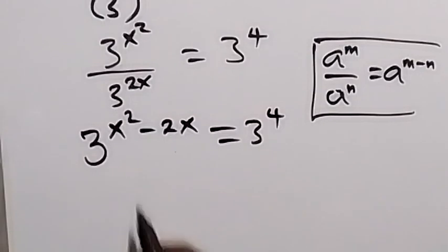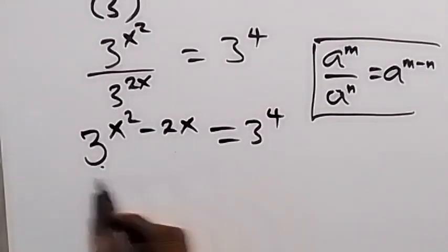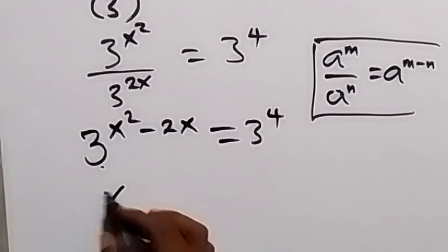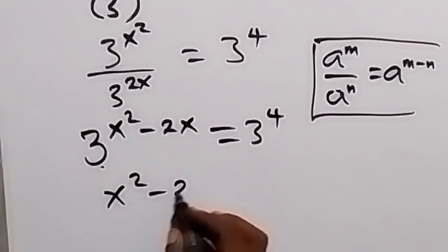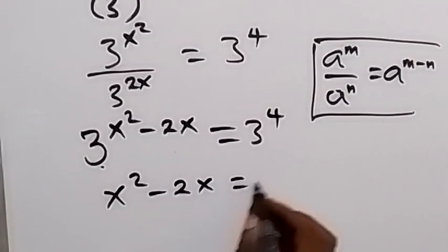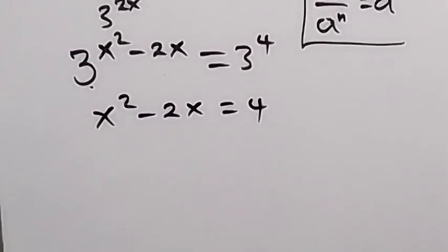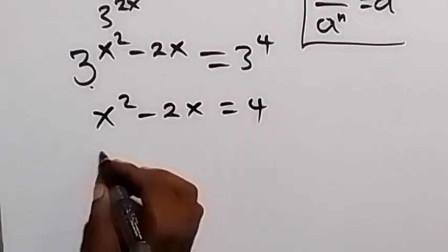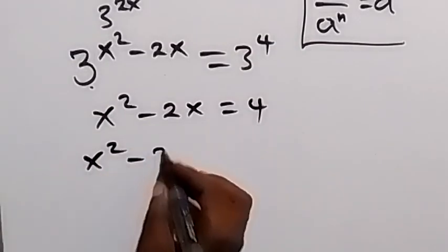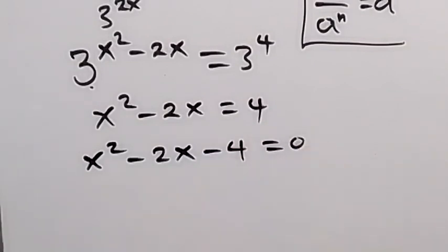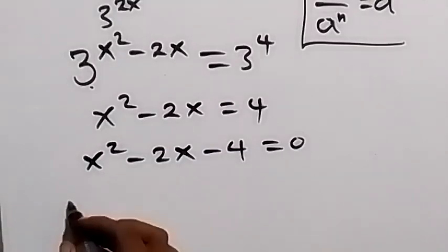And from here, we have the same base. The bases are equal, then we equate the powers, so this will be x squared minus 2x equals to 4. And by the time we take 4 to this side, we have x squared minus 2x minus 4 equals to 0.